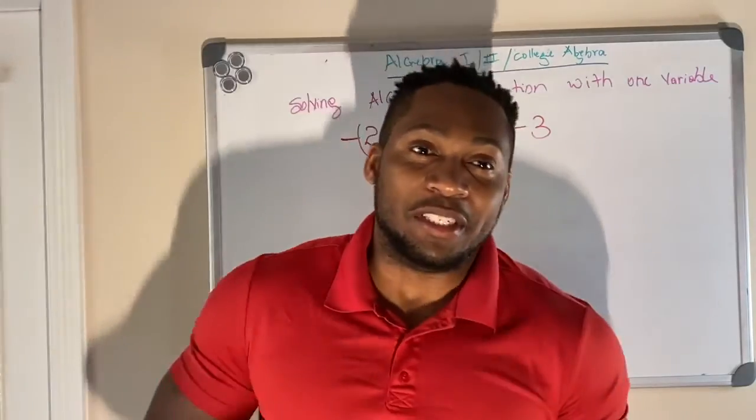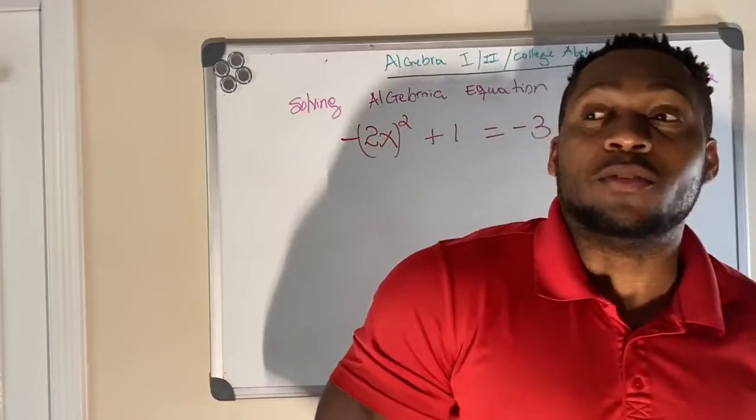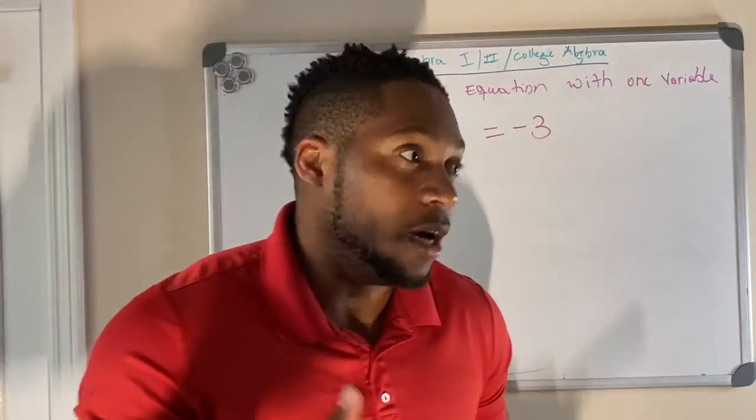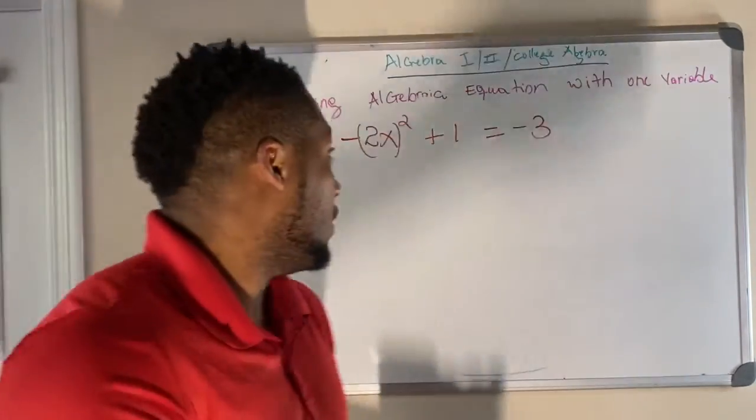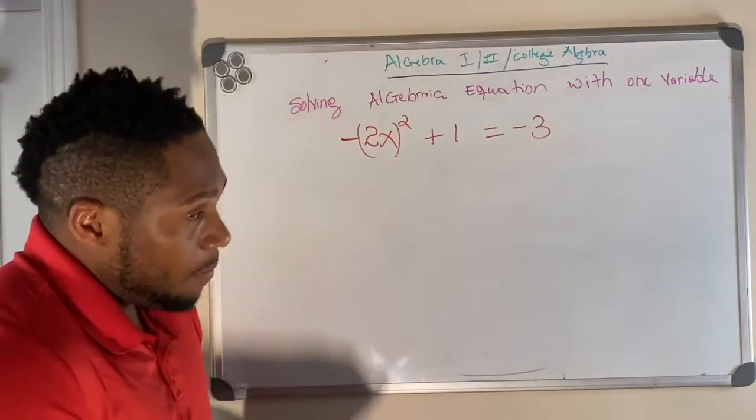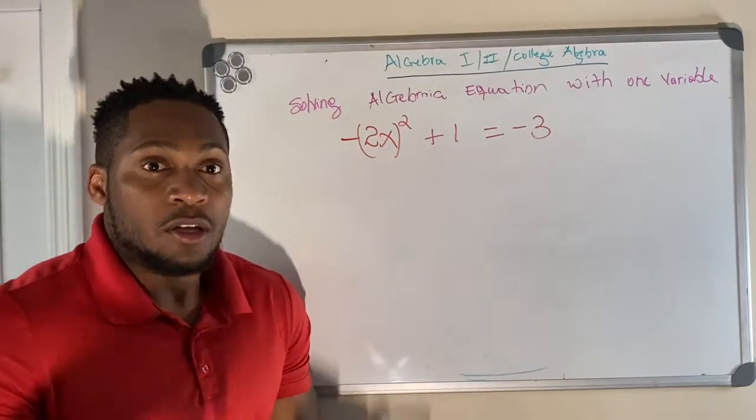Hey, welcome back to another episode of Algebra. We're still solving an equation with one variable. This time we're going to solve something that has square on it. So that means we're probably going to have two solutions.